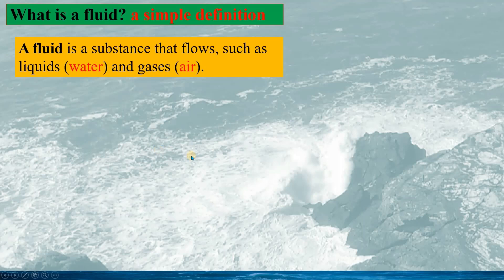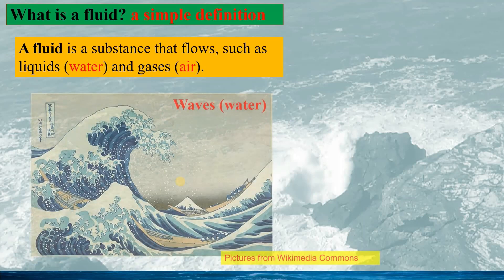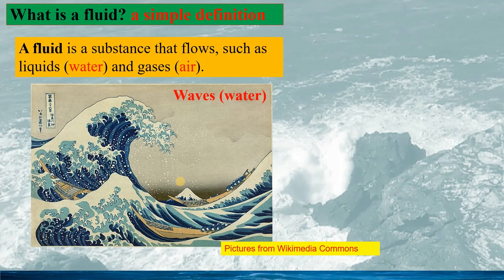In a simple definition, a fluid is a substance that flows, such as liquids, water and gases, air etc. Water and air are the two most important fluids in our life. Actually we cannot live without them. We need water to cook food, we drink water, we wash, and about 60% of our body is water.